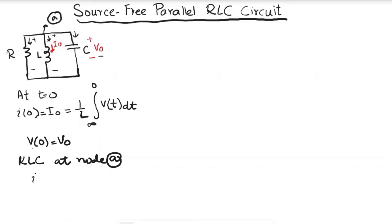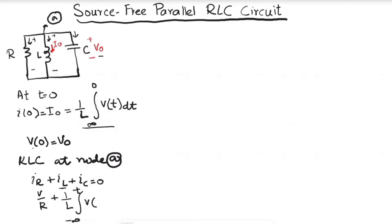Applying KCL at node A, all currents leaving the node are positive: i_R + i_L + i_C = 0. By Ohm's law, i_R = v/R. The inductor current i_L = (1/L) integral from negative infinity to t of v(t) dt. The capacitor current i_C = C dv/dt.